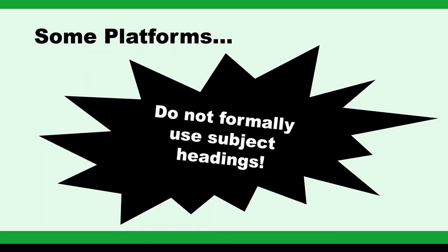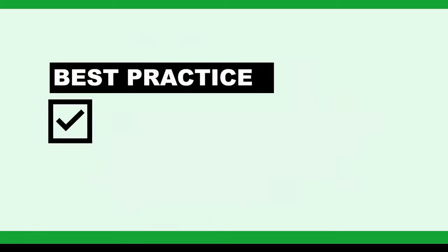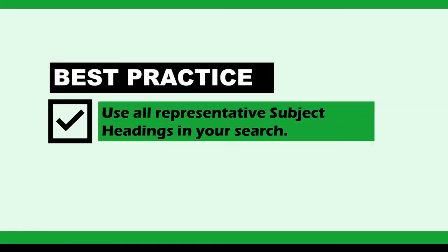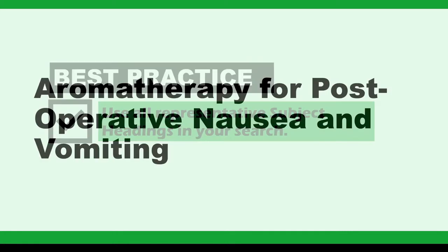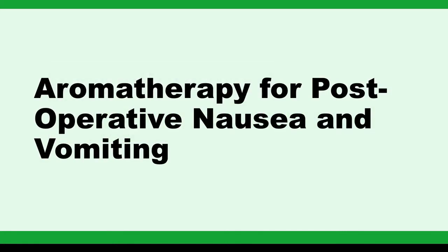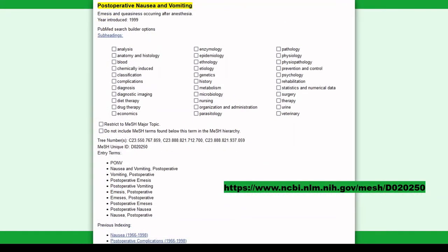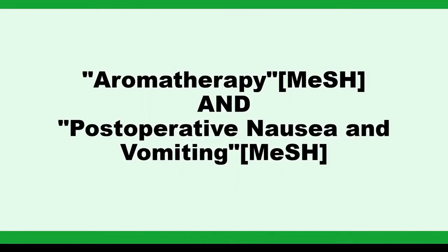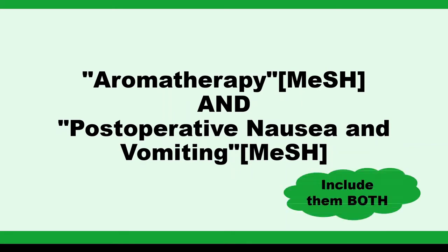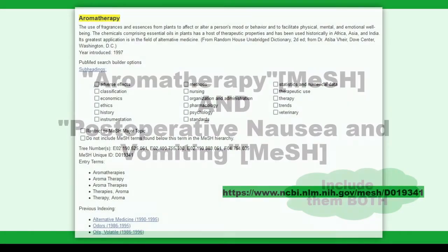As a best practice, searchers should include all representative subject headings in a search. Let's look at our example from part two: aromatherapy to treat postoperative nausea and vomiting. In PubMed's MeSH, there's a subject heading for aromatherapy and a subject heading for postoperative nausea and vomiting. It is necessary to include them both. If there were related or previously used subject headings that you consider important, you should use those as well.